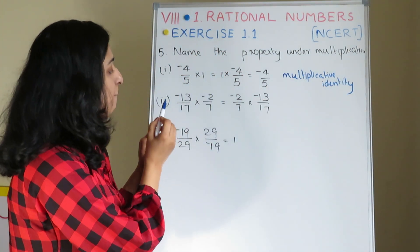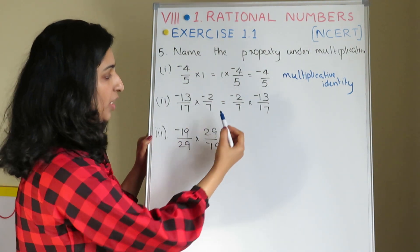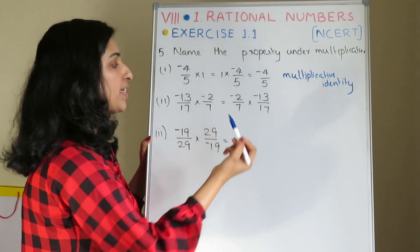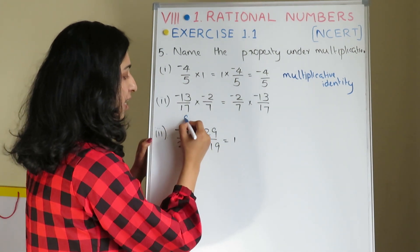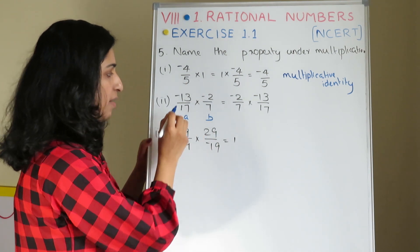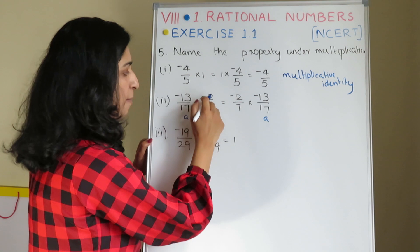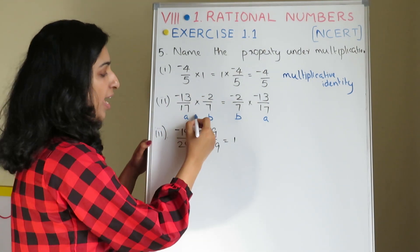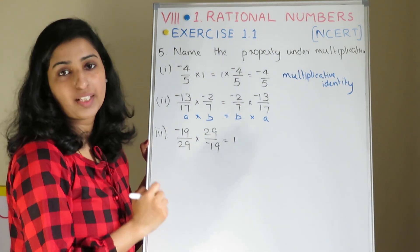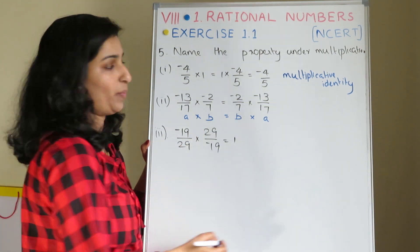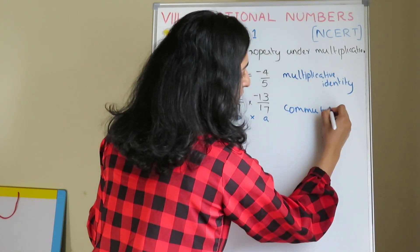Second one, minus 13 by 17 into minus 2 by 7 equal to minus 2 by 7 into minus 13 by 17. This property is called Multiplicative Identity.